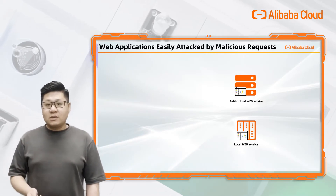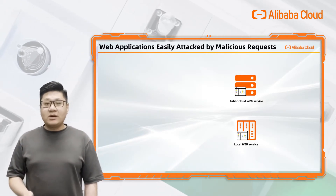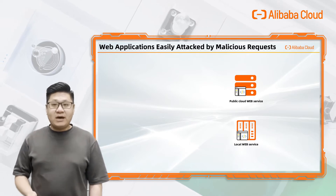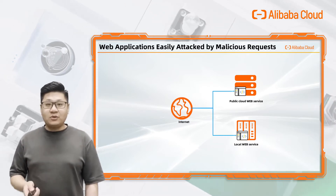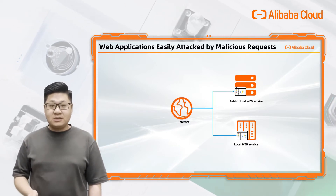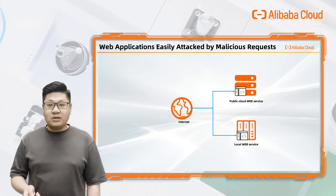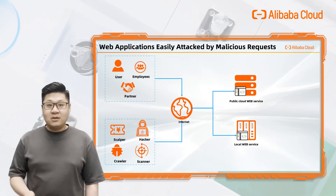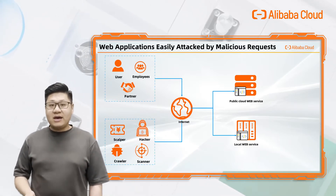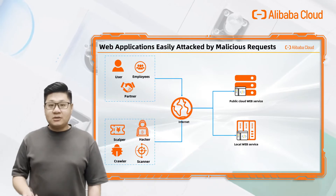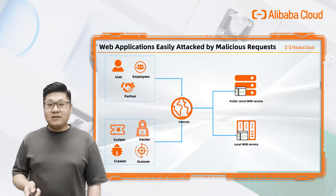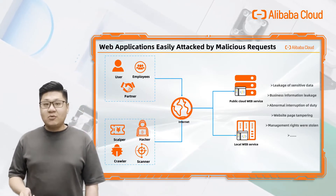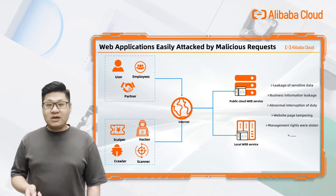The web application normally deploys on-premise data center or cloud. It provides a service to the internet through the domain and IPs, and they will serve their employees, partners, and clients through the internet. But there are bad guys — for example, crawlers, scanners, and even professional hackers — who want to attack the website with malicious requests.